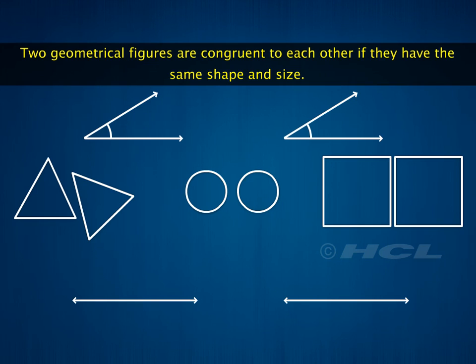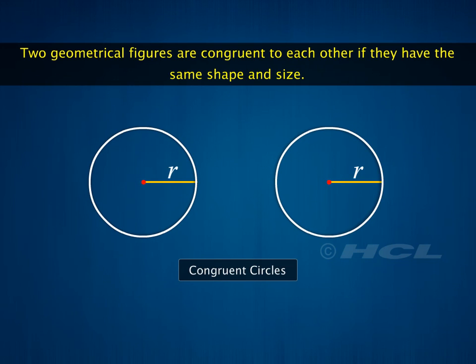We know that two geometrical figures are congruent to each other if they have the same shape and size. For example, two circles are congruent if their radii are the same.